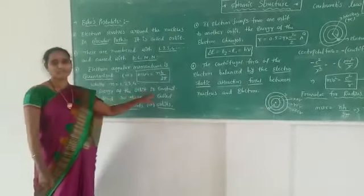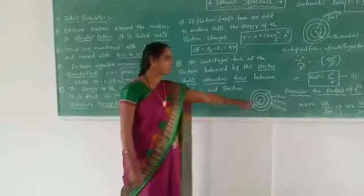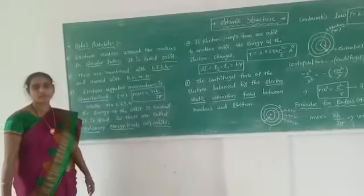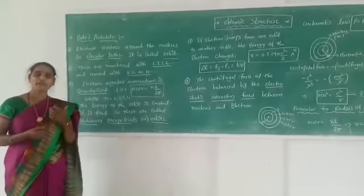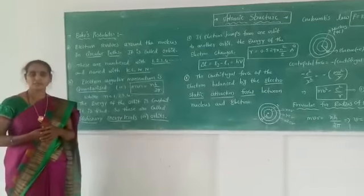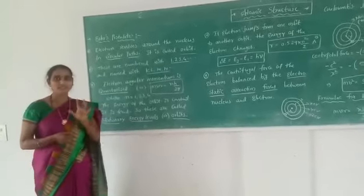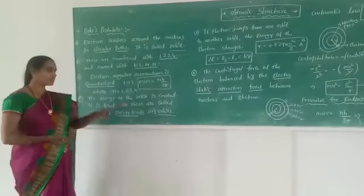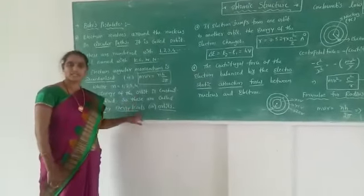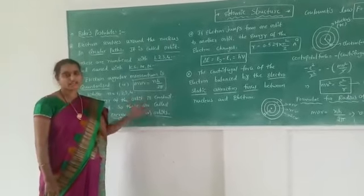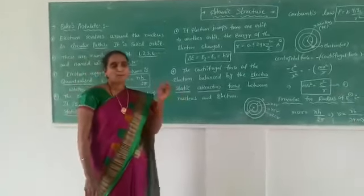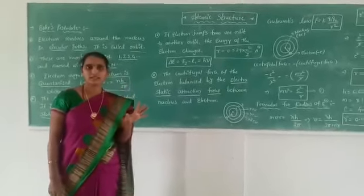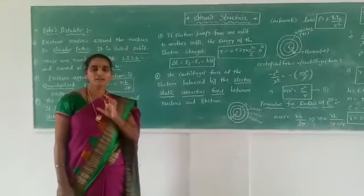The next postulate is that the energy of the orbit is constant. We know already this is the nucleus, and around the nucleus, the electron is revolving in a circular path — the circular path called an orbit. Each orbit is associated with some energy, and the energy of the orbit is constant. That is why the orbits are called stationary energy levels or stationary energy orbits. For a particular orbit, the energy of the electron is also constant — it should not vary.